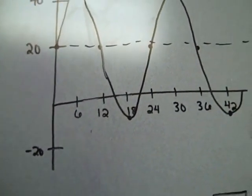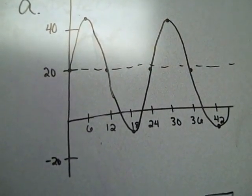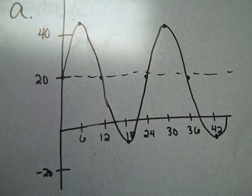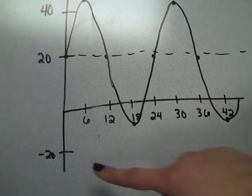And it says for a to draw the graph over two periods. So we plugged the equation into our calculators and we graphed the equation to show the height of the Ferris wheel at all the different times.